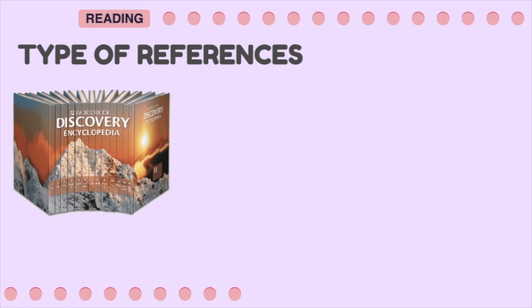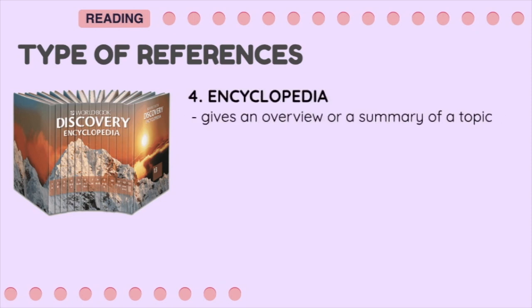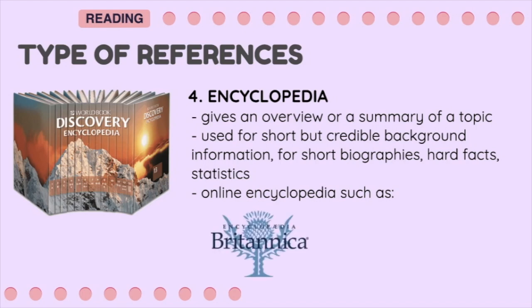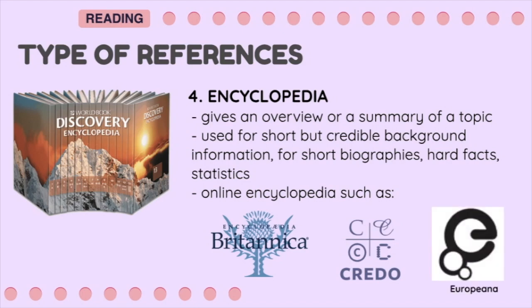The fourth type of general reference is the Encyclopedia. It gives an overview or summary of a topic and can be used for short but credible background information, short biographies, hard facts, statistics, and many other types of information. Online encyclopedias available include Britannica, featuring 100,000 scholarly articles and highly respected; Credo.com, which provides access to encyclopedia entries on thousands of topics; and Europeana, which allows you to discover inspiring cultural heritage from European museums, galleries, libraries, and archives.